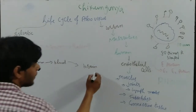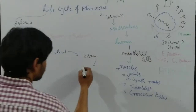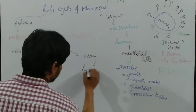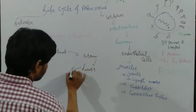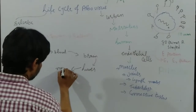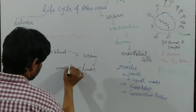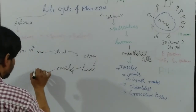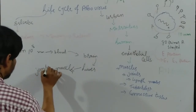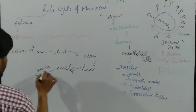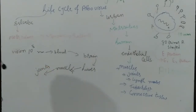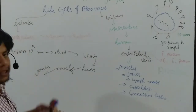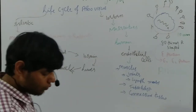From the brain area, it is then transmitted to the liver, then to the muscle, and finally they reach the joints area, where they cause arthritis.